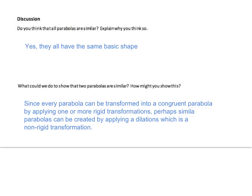Do you think all parabolas are similar? Yes. They all have the same basic shape — they open up, down, left, or right. They can just be rotated, translated, reflected, and dilated. Since every parabola can be transformed into a congruent parabola by applying rigid transformations, similar parabolas can be created by applying dilations, which is the only non-rigid transformation that changes the shape.